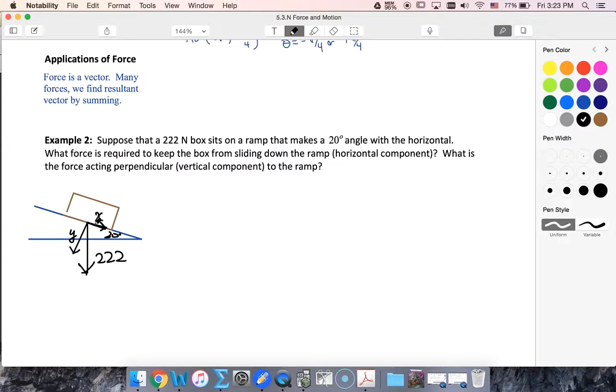So we know that this angle here, if I put in a horizontal, this would be 20 here, which would be 70 here, which means that this is also 20. So 20 here, 20 here, lots and lots of 20s.